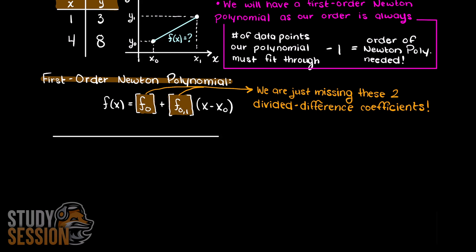To set up a divided difference table of the first order, we will create the column headers x, y, and then we will just call it first order. Then, let's just translate our discrete data supplied to us in this table under x and y columns.